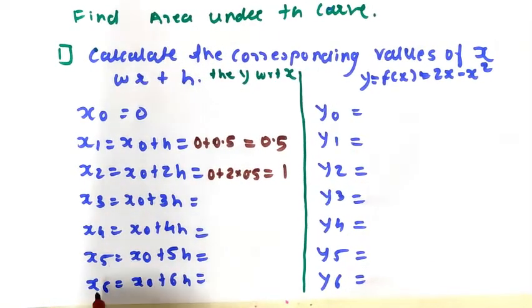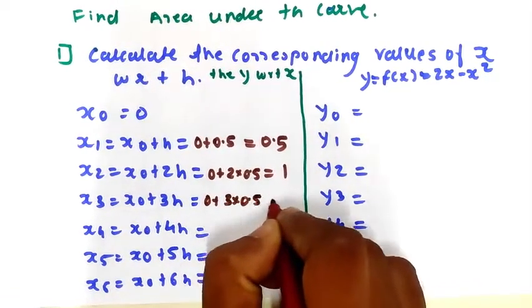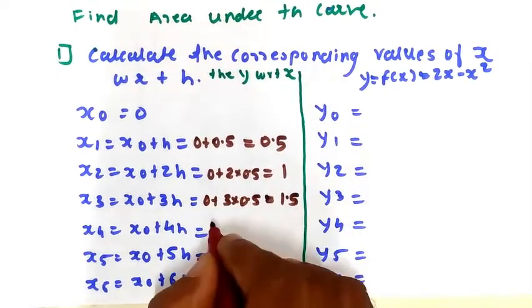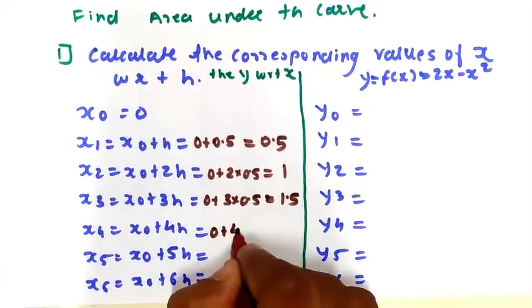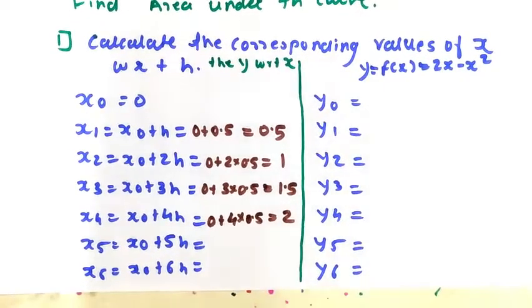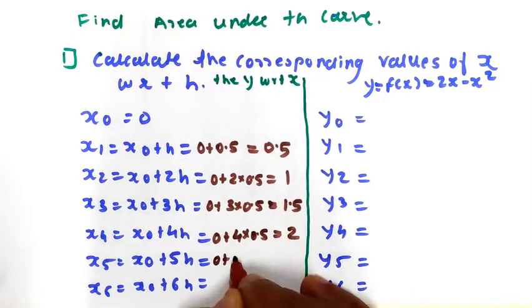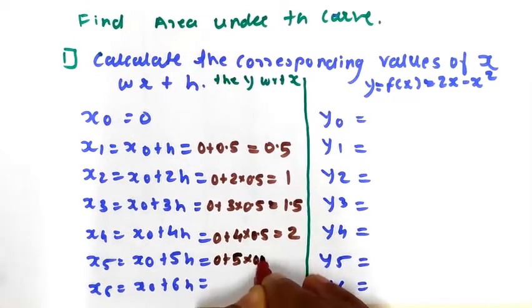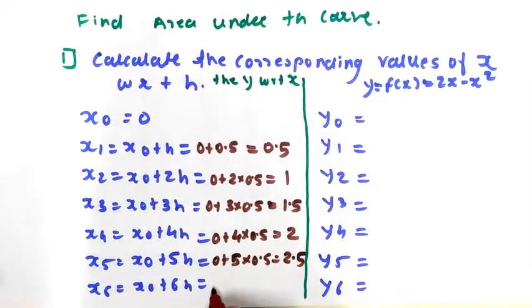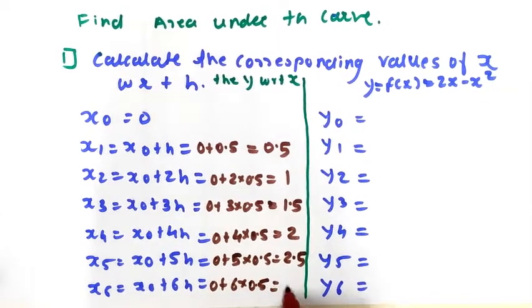x3 = 0 + 3×0.5 = 1.5. x4 = 0 + 4×0.5 = 2. x5 = 0 + 5×0.5 = 2.5. And finally x6 = 0 + 6×0.5 = 3. So we have found all values of x with respect to h.